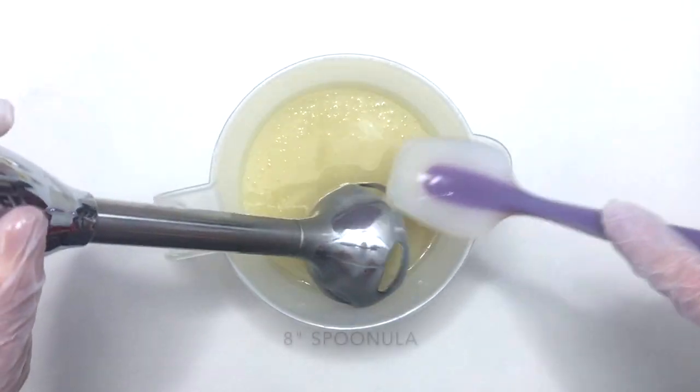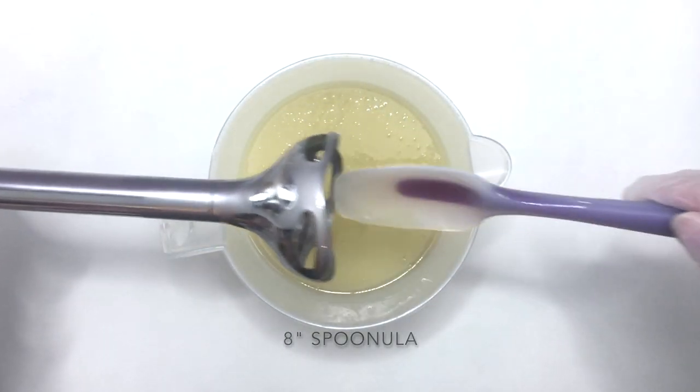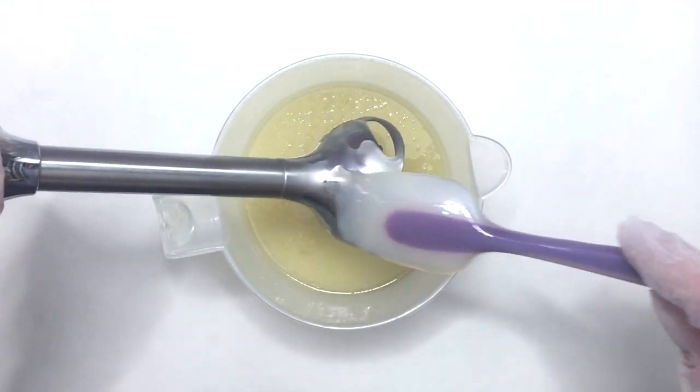I clean off the stick blender with my small spoonula. I use this for small batches and the smaller portions of soap. It's my favorite soapy tool.